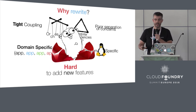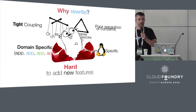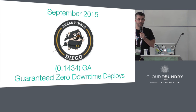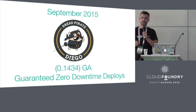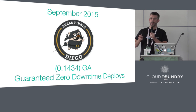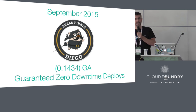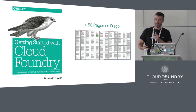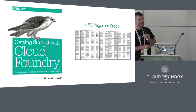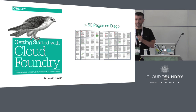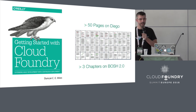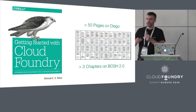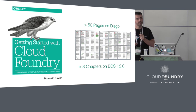Diego was pitched as a ground-up rewrite of the Elastic Runtime in Go. In September 2015, the first GA version of Diego was released — the first version that supported zero downtime deploys. Diego is fantastic for the Cloud Foundry community, but as an author trying to write about Cloud Foundry, this was really problematic. It meant I had to go away and refactor 50 pages very quickly. Then Dimitri came out with BOSH 2.0 earlier this year and I had to refactor another three chapters.